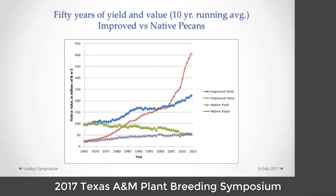Can we use genetic resistance to develop cultivars that might not rely on fungicide applications at that level? Looking at the yield and value of the pecan industry over the last 50 years using a 10-year running average, there have been some upticks and plateaus. There's been a recent increase in improved pecans and a huge increase in their value, while native pecans are decreasing in yield. I'm concerned that we have ignored the native resource and we need to represent it.